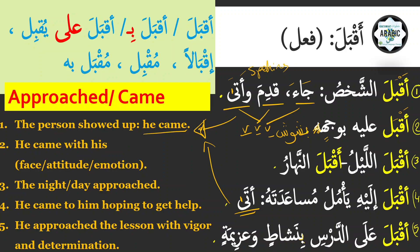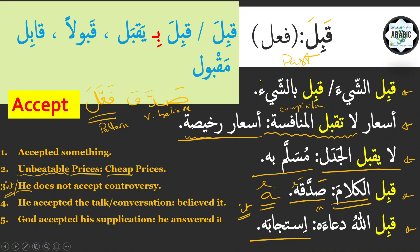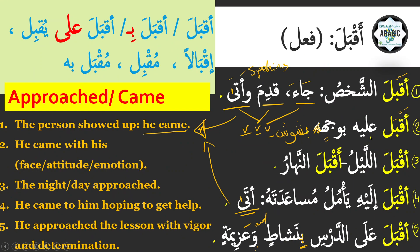The last sentence is أقبل على الدرس بنشاط وعزيمة — he approached the lesson with vigor and determination, meaning he came in with good energy. عزيمة is determination and نشاط is vigor. و means 'and'. So these are the sentences related to the verb قبل and the verb أقبل. Thank you for watching, I hope these sentences help you add more vocabulary to your list. السلام عليكم.